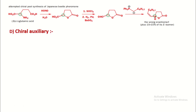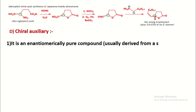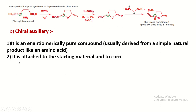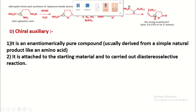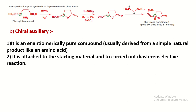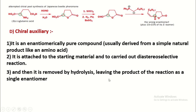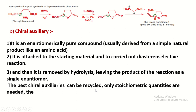Now, what is meant by chiral auxiliary? Generally, it is an enantiomerically pure compound, usually derived from simple natural products like amino acids. It is attached to the starting material during the reaction to carry out a stereoselective reaction. We know that a stereoselective reaction gives only one enantiomer. After obtaining the required enantiomer, the chiral auxiliary is removed by hydrolysis, leaving the product of the reaction as a single enantiomer. The best chiral auxiliary can be recycled and recovered, and only stoichiometric quantities are needed, so there is no waste.